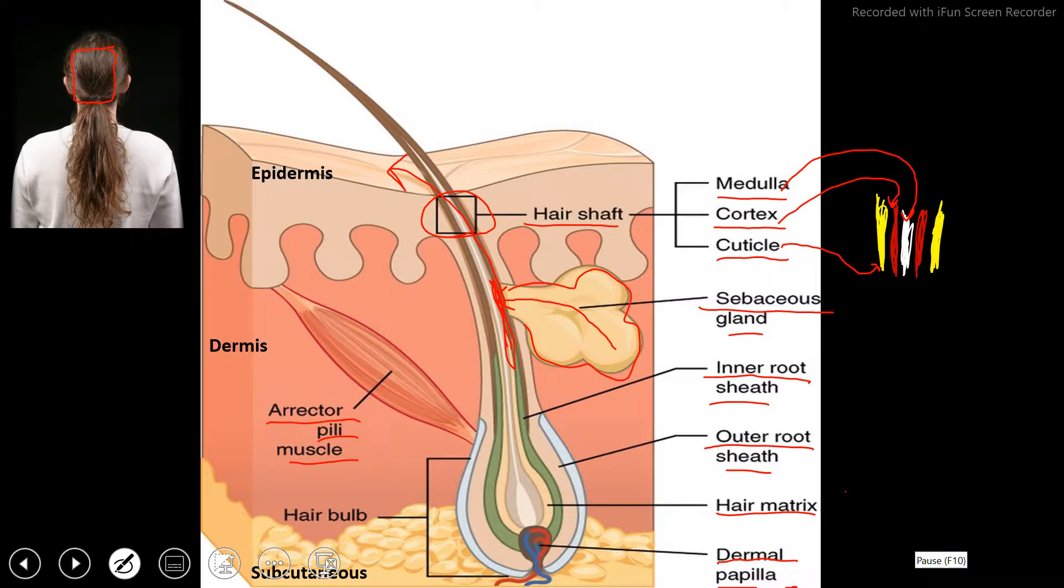Something that can be pretty easy to confuse with a sebaceous gland is a sweat gland. The sweat glands will look like this, kind of like these blue squiggly things here and here.